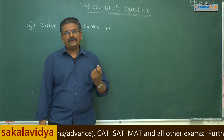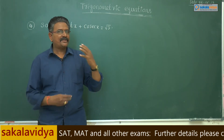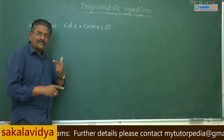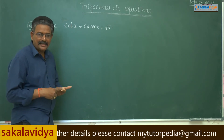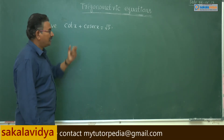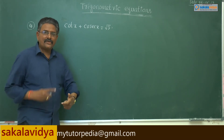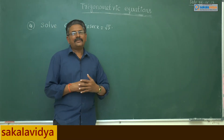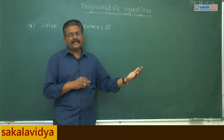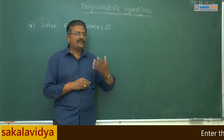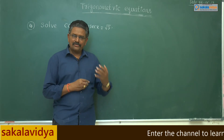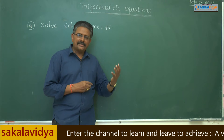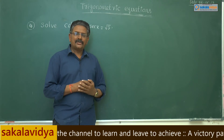So, to solve this problem, first of all we have to change cot x in terms of cos x and sin x, and cosecant x in terms of sin x. After that it can be put in the form of a sin x plus b cos x equals c, so that we can solve the problem.